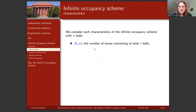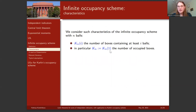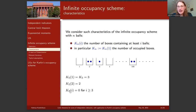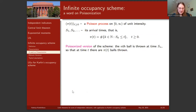We consider the statistic K_j(n): the number of boxes containing at least j balls after n balls have been thrown. For j=1 this is simply the number of occupied boxes. In a particular example with five balls, the number of occupied boxes is three (boxes 2, 3, and 100); the number of boxes with at least two balls is two (boxes 2 and 100); and the number of boxes with at least three balls is zero.